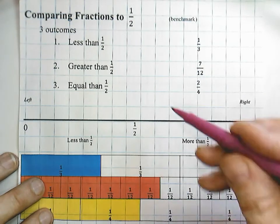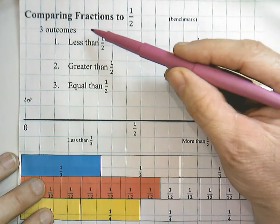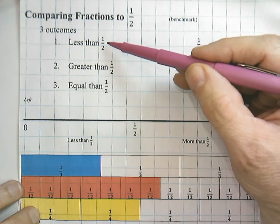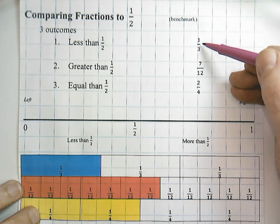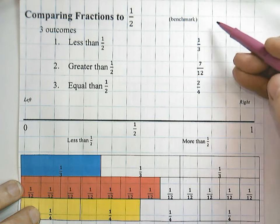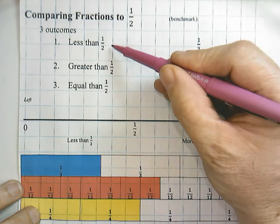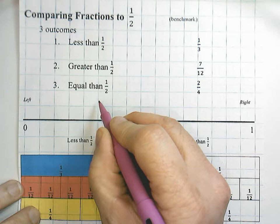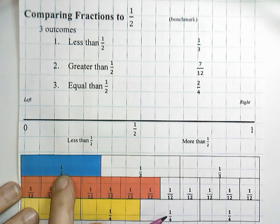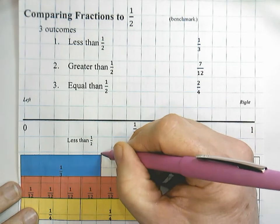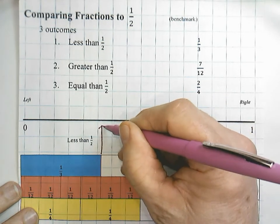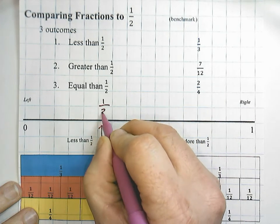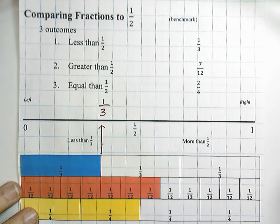When we compare fractions to one-half, remember there are three outcomes. Less than half — for example, one-third, when I compare it to half, is less. I would write one-third right about here. You can see our fraction model here, and it ends roughly here. It doesn't have to be exact, but you want to get as close as you can within reason.